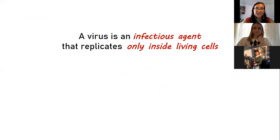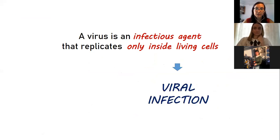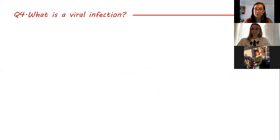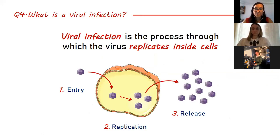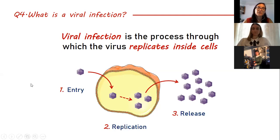Let's go back to the definition: a virus is an infectious agent that replicates inside living cells. This lets us understand the process by which the virus replicates inside living cells. This process is called viral infection — and this is question number four. Viral infection is not just the entry of the virus; it is the entry, the replication, and the release of the virus. People often think that infection is just the entry of the virus, but infection is the whole thing.